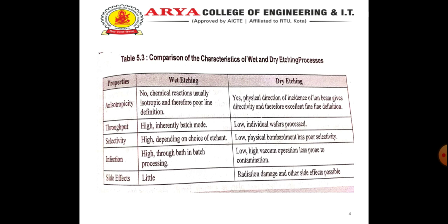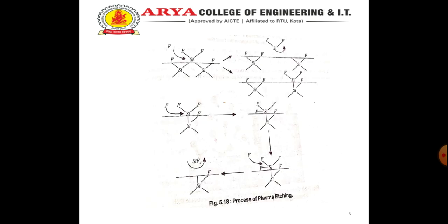Now the differences between wet etching and dry etching and we were discussing about the process of plasma etching. In plasma etching, for breaking the C-F bond, since CF4 energy of 105 kcal/mol is required, and for breaking silicon-silicon bond energy of 42.2 kcal/mol is required.